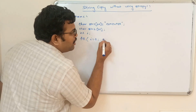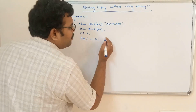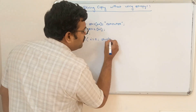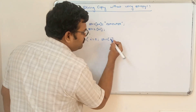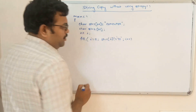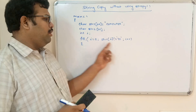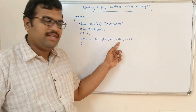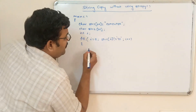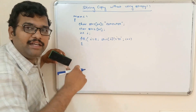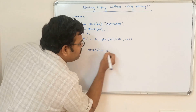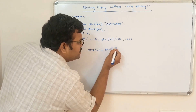Write the for loop: start from i=0, and the termination condition is str1[i] not equal to '\0', with i++. Starting from 0, the end condition is str1[i] not equal to '\0'. Inside the loop, copy each character: str2[i] = str1[i]. It is a simple assignment — every character at position i from string 1 is copied to string 2.